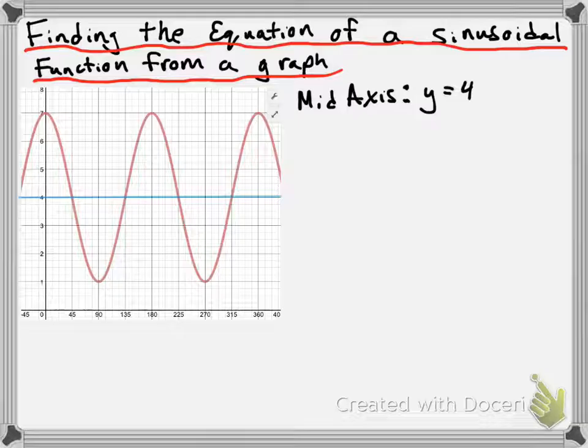Because of that, you might recall that the middle axis is actually what tells us what our c value is going to be. There's a connection between the c value and the middle axis. So the c value in our equation is going to be c equals 4.